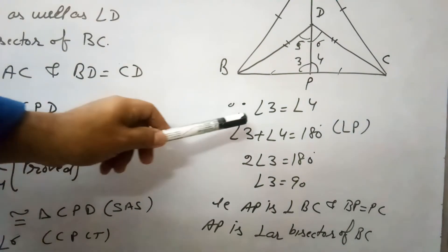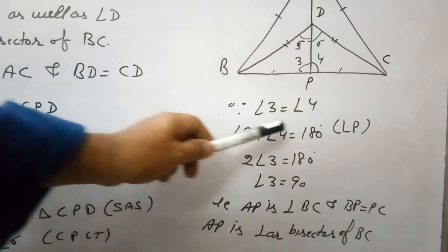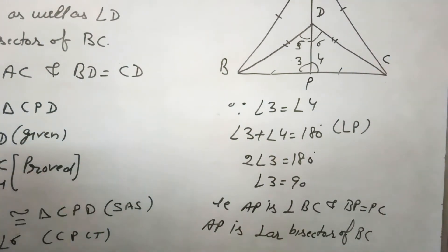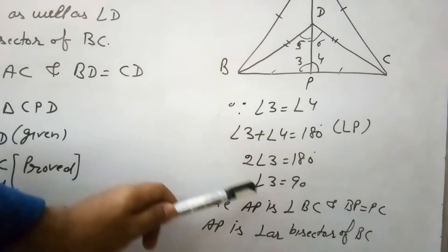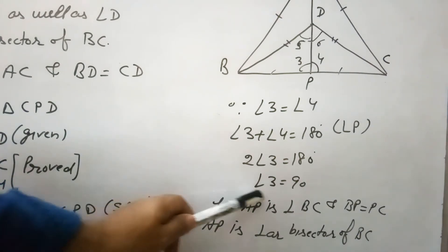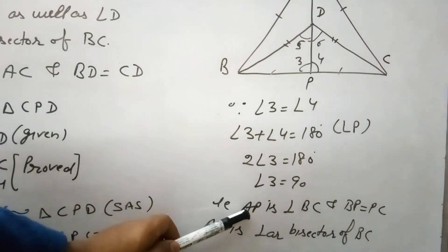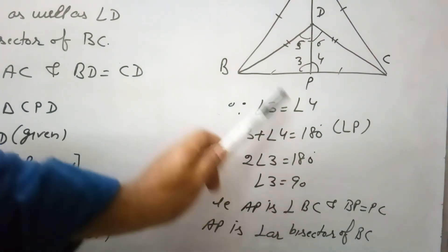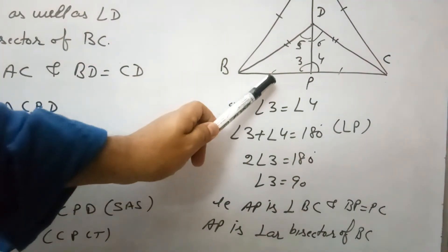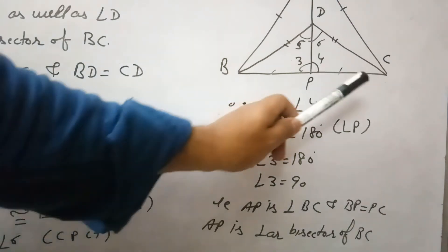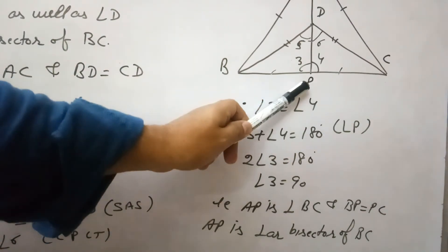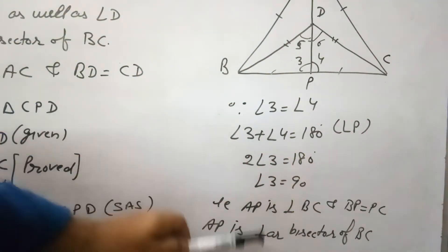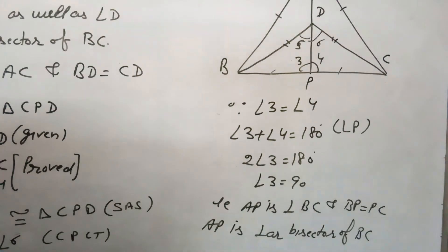Since angle 3 equals angle 4 and their sum is 180 degrees because they form a linear pair, angle 3 equals 90 degrees. So AP is perpendicular to BC, and since we have also proved that BP equals PC, AP is the perpendicular bisector of BC. This completes the proof of all four parts.